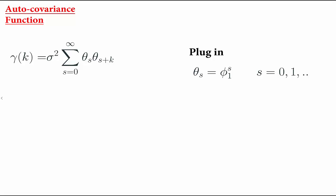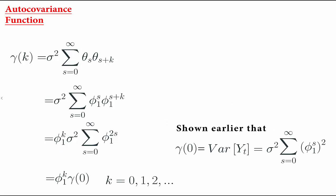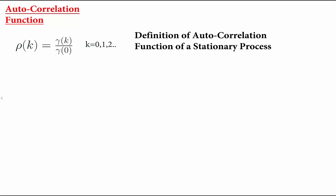We can do the exact same thing for the covariance function. Using the general MA infinity covariance formula and plugging in theta_s = φ1^s and theta_{s+k} = φ1^(s+k), we use the product of powers rule to simplify. We can factor φ1^k outside the sum, and the remaining sum multiplied by σ² is just the variance γ0 from the previous slide. Once we have the covariance function, the correlation function is just the covariance divided by the variance, which gives simply φ1^k. So the correlation function of an AR1 is the AR1 coefficient raised to the power k.